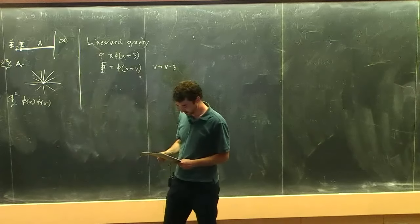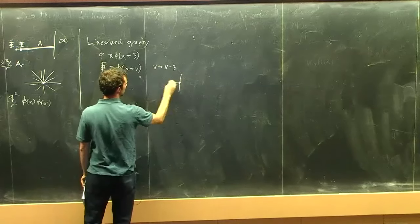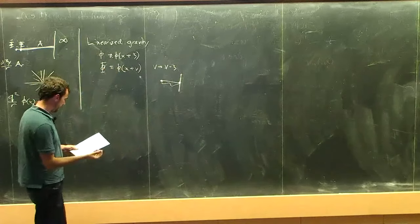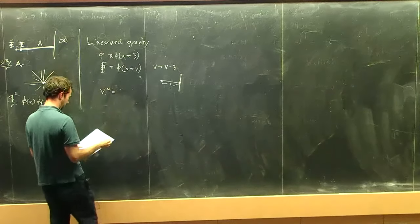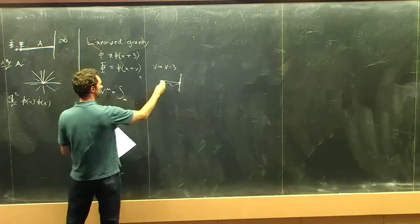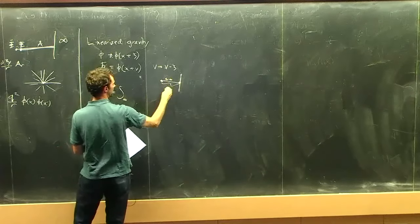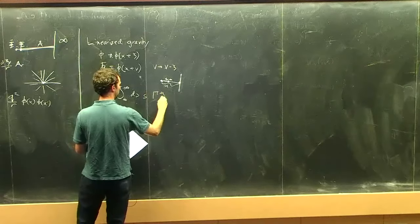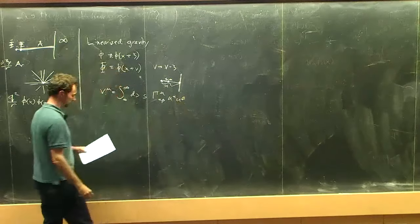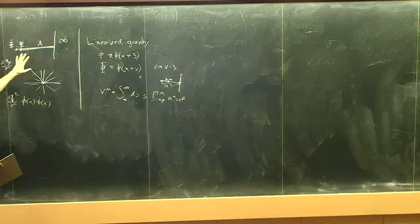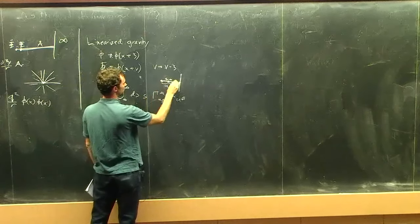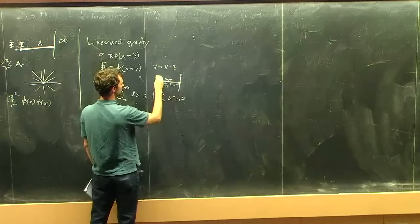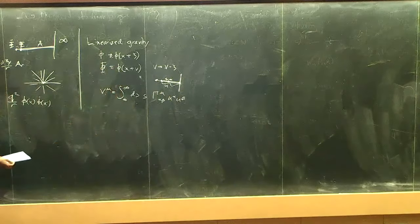One can start at infinity and shoot in a geodesic, fixing its initial conditions and length. At the linearized level, this gives a V-mu expressed as an integral ds times the metric perturbation contracted with the normal u. This is constructing a gravitational analog of an electric string, and it fails to commute when the strings line up in a problematic way.